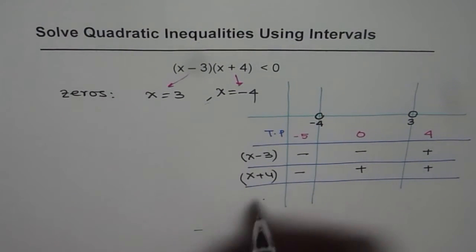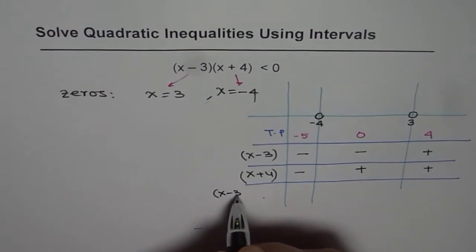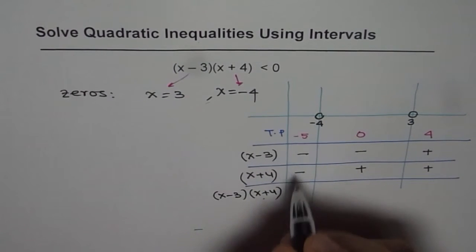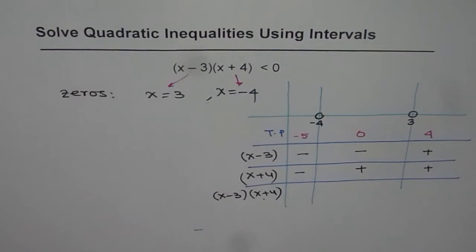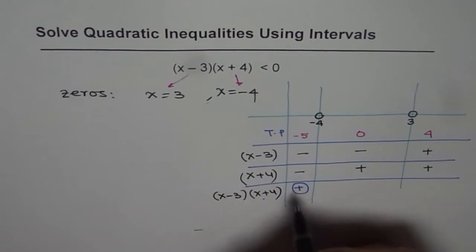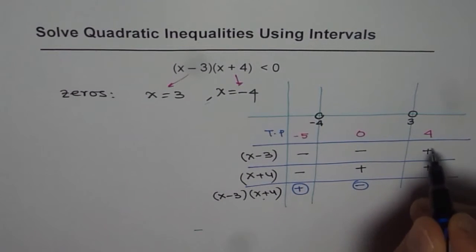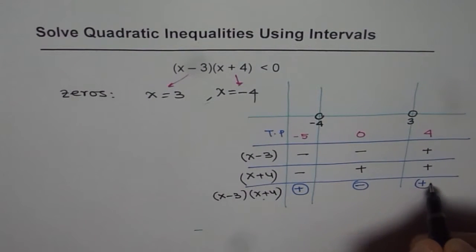Now when you multiply these two, that is our quadratic equation, which is x minus 3 times x plus 4. What do we get? So let us multiply. Two negatives will give us positive. A negative and a positive will give us negative. Two positives will give us positive. Do you see that?